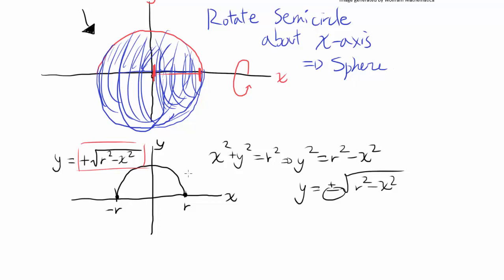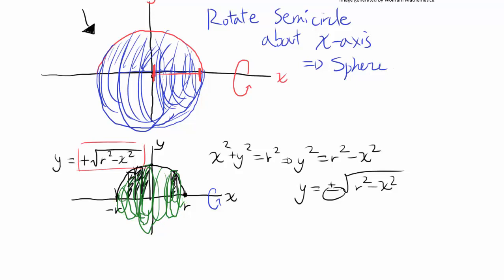Now, think about this semicircle as being composed of infinitely many thin rectangles. You have a bunch of these rectangles, and you're rotating them around the x-axis. When you rotate each rectangle, you get a disk. Combining all of these disks — large ones in the middle, smaller ones toward the edges — gives you a sphere.